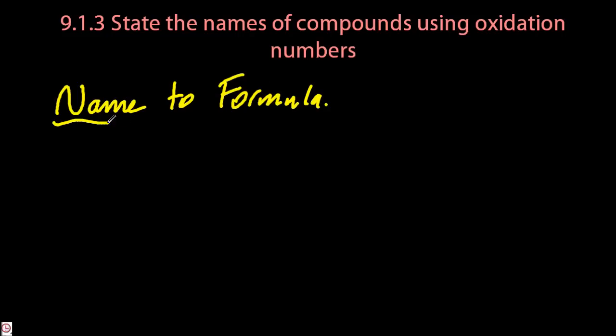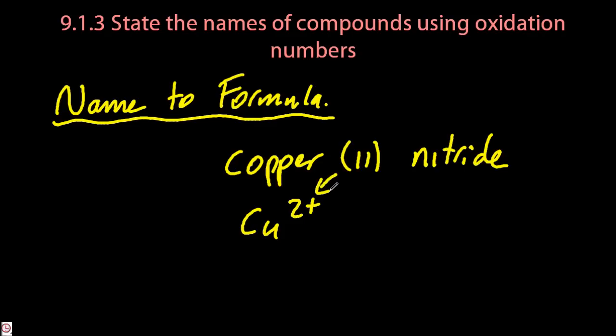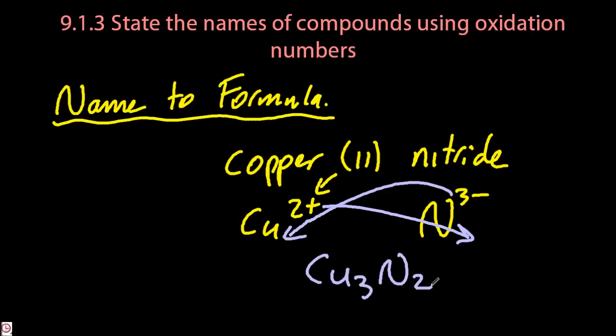Okay, going the other way, the name to the formula. So let's choose copper(II) nitride. Well, copper is Cu, and I know it's 2+, because that's what the 2 means. And nitrogen, as nitride, is 3-. What I've just done there is the crossover method. The numbers kind of swap, ignore the signs, and that gives me Cu3N2.